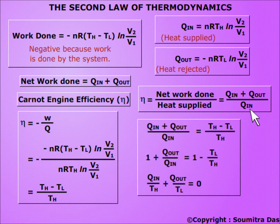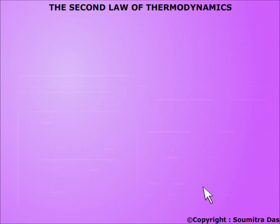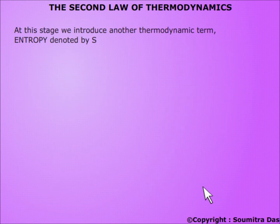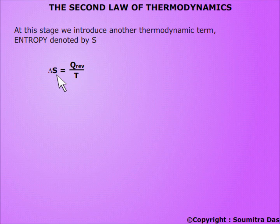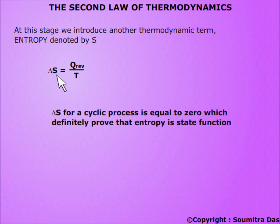Simplifying, we get Q_out/TL + Q_in/TH = 0. At this stage we introduce another thermodynamic term — entropy — denoted by S, such that ΔS = Q/T. Note carefully that this ratio equals entropy only if the heat involved is from a reversible process, otherwise not. Also note that ΔS for a cyclic process is 0. Therefore, it is proved that S is a state function.